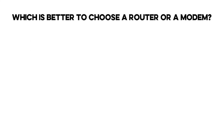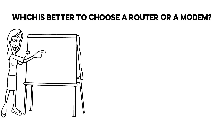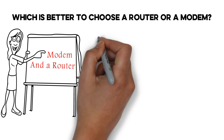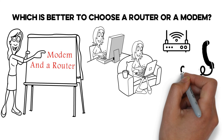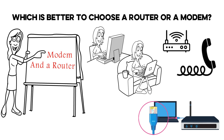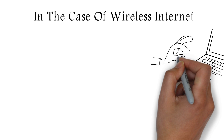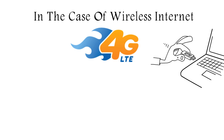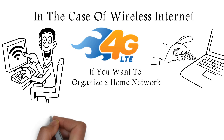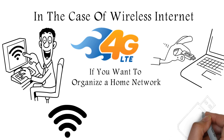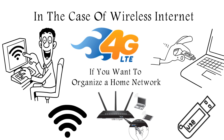Which is better to choose — a router or a modem? These are totally different devices for different purposes. ADSL modems are outdated today, as internet provided over a telephone line is slow, so it's better to choose wired or wireless internet. For wireless internet you need a USB modem, and it's better to choose the newest one with 4G LTE support to ensure the highest speed. If you want to organize a home network to distribute the internet signal received by a USB modem, you need a router with a USB connector.